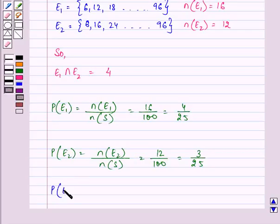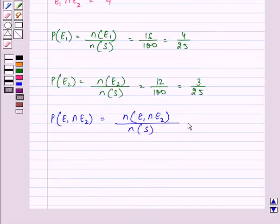Also, probability of E1 intersection E2 is equal to number of elements that are in this divided by number of elements in sample space. That comes out to be 4 upon 100 and that is 1 upon 25.